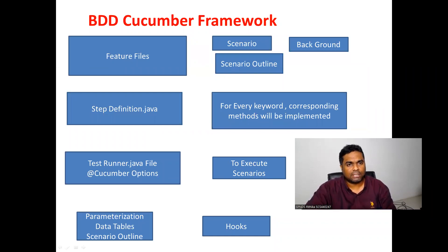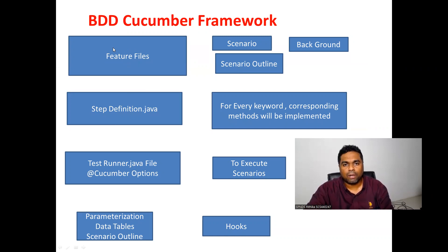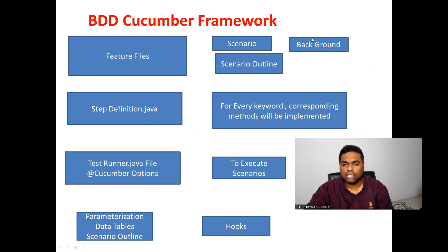To summarize the BDD Cucumber framework: Feature files contain a set of steps to achieve a particular test objective. Inside a feature file, we write a Background section followed by Scenario or Scenario Outline. Background contains common reusable steps — like launching the browser and opening the application URL — which execute before every scenario.